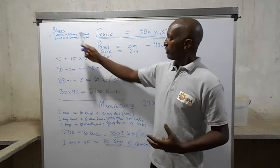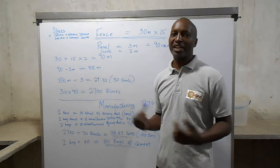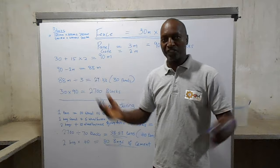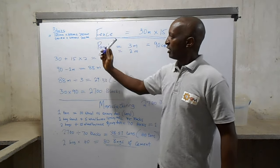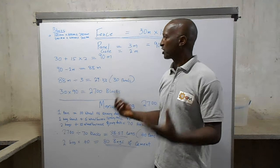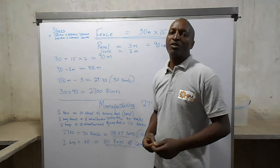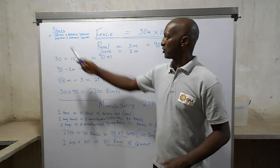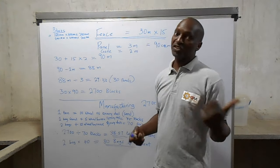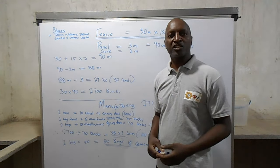Here in Malawi we use the 150mm by 400 by 200 block when building single storey houses — houses that are not double storey. The 200mm is used for double storey houses, multi-storey city buildings, hospitals, or schools. In other countries it differs; in Zambia I've heard they use the 200mm blocks even for single storey houses.